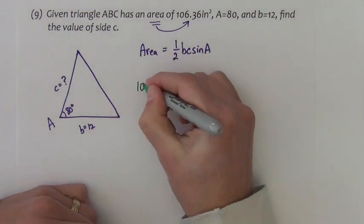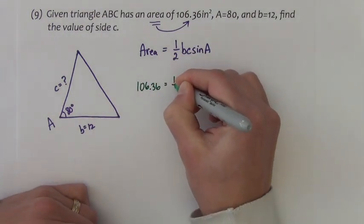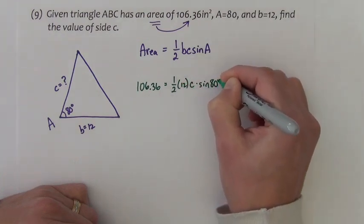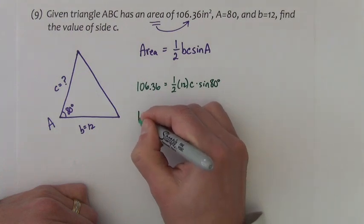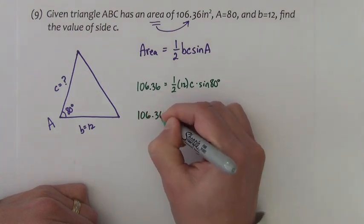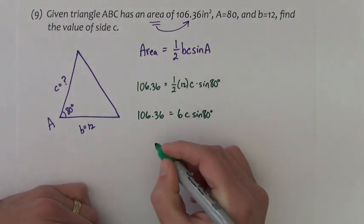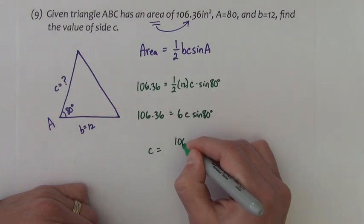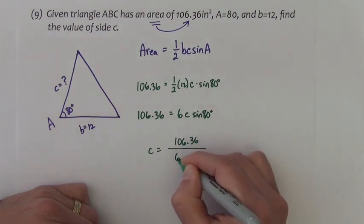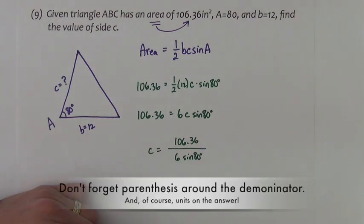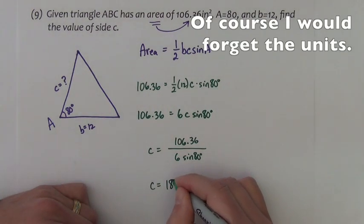So I'm going to have area 106.36 equals half times 12 times C times the sine of 80 degrees. So that's 106.36 equals half and 12 makes 6 C sine of 80 degrees. So C is going to be 106.36 divided by 6 sine of 80. And now I'm ready to type this all in. I get C to be 18.